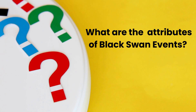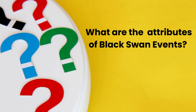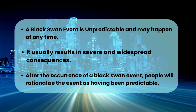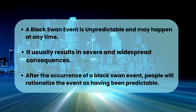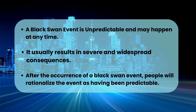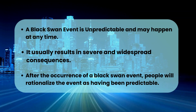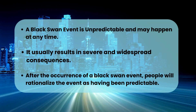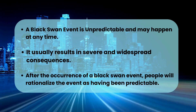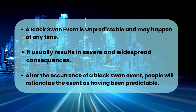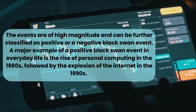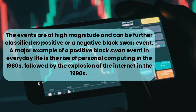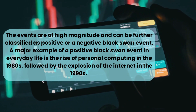What are the attributes of black swan events? A black swan event is unpredictable and may happen at any time. It usually results in severe and widespread consequences. After the occurrence of a black swan event, people will rationalize the event as having been predictable. The events are of high magnitude and can be further classified as positive or a negative black swan event.